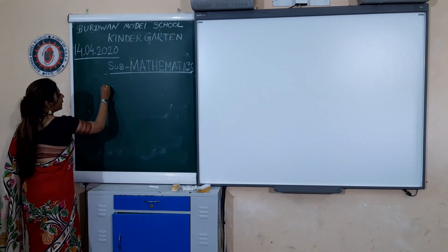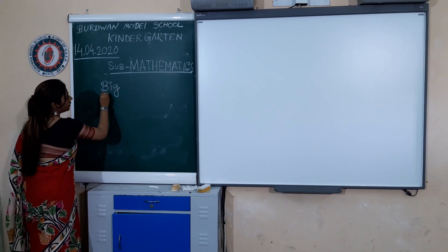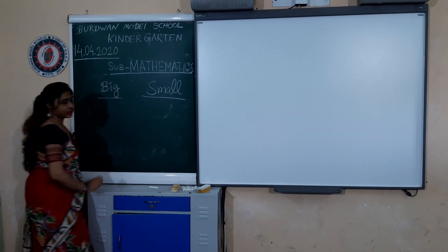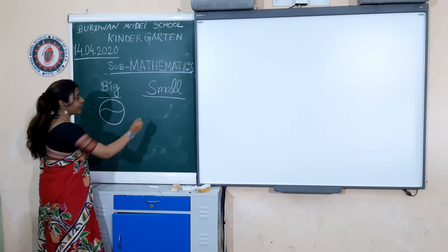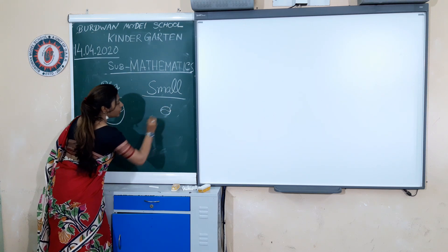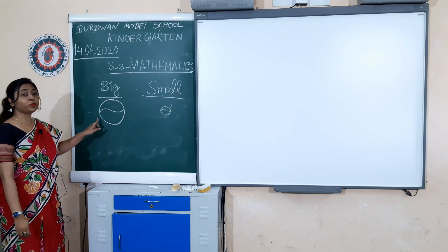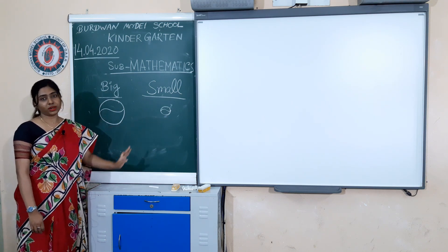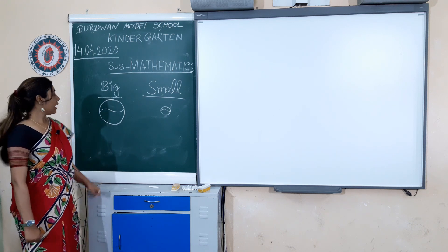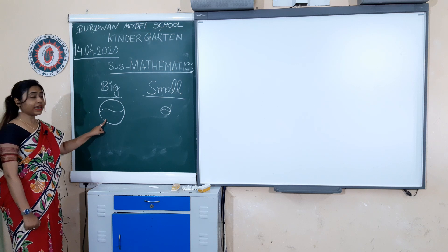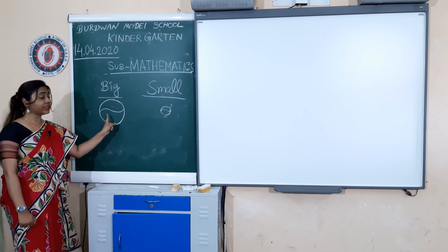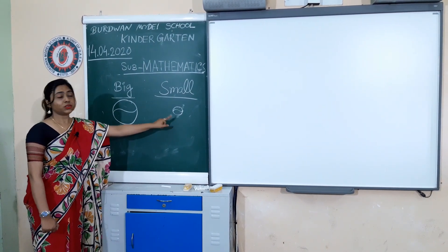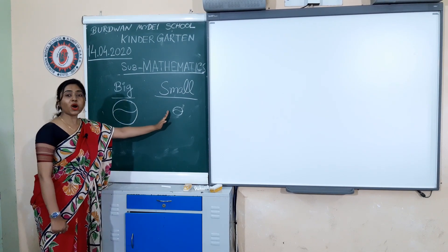Suppose big and small. This is a ball and this is also a ball. But what is the difference? This is a big ball and this is a small ball. So how will we compare this? This one is big and this one is small. It is bigger than this ball, so it is a big ball, and this is a small ball.